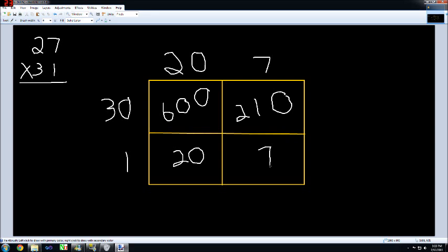Now we're not done yet. We need to go ahead and add all the numbers in the box together to find the product or answer to our multiplication problem. I always list the numbers from greatest to least.